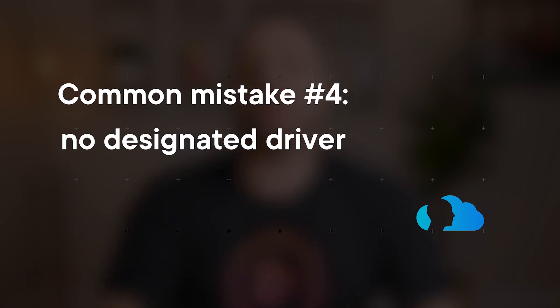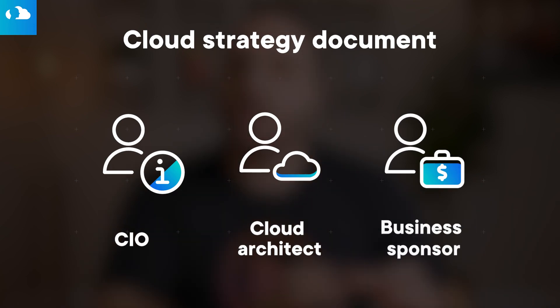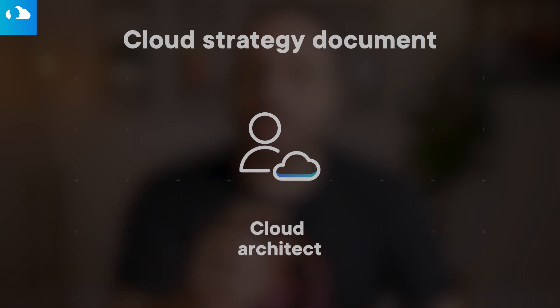Common mistake number four: not appointing someone that is responsible for driving this project. Often cloud projects are designed or documented by committee, with more than one person involved who aren't on the same page — that is a big mistake. You need your CIO, your cloud architect, your business architect, your enterprise architect, and your business sponsor. Your cloud architect is the person that's going to drive the project, who the CIO will hold accountable. You need one person responsible to lead, coordinate, and document everything.